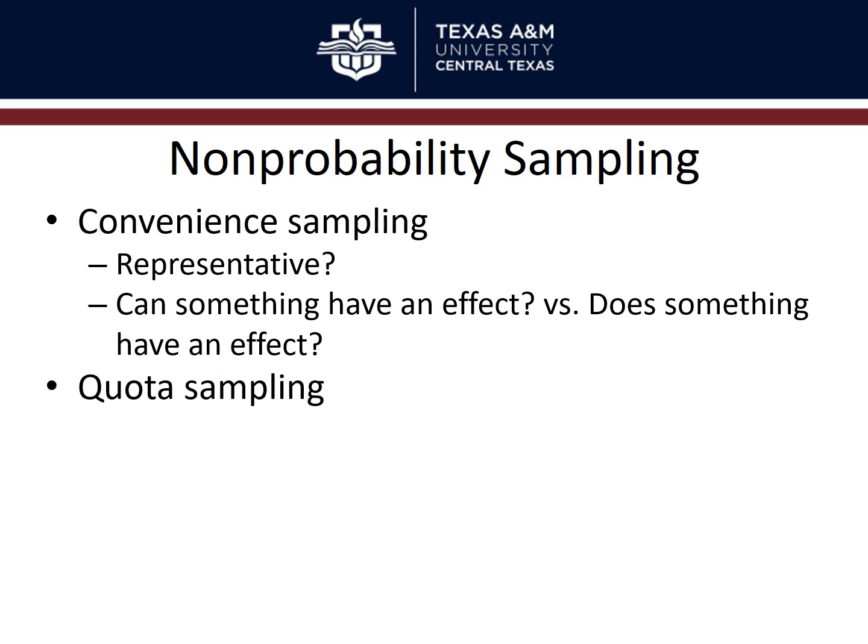Quota sampling is like the convenience version of stratified sampling — you use convenience sampling within strata. For example, if you want equal numbers of men and women to examine gender differences, you set a quota: keep recruiting until you have 50 men and 50 women. Once you hit 50 men, you stop recruiting men and continue until you get 50 women.